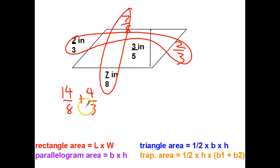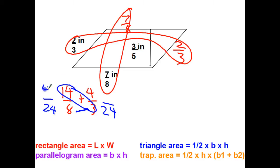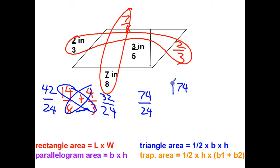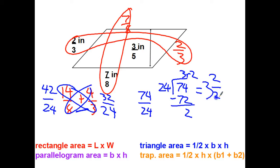The least common denominator is 24, which is the same thing I get when I cross multiply. So: 14 times 3 is 42, 4 times 8 is 32, and 42 plus 32 equals 74. That gives me 74 twenty-fourths. 24 goes into 74 three times — three times 24 is 72 — leaving a remainder of 2, so I get three and two twenty-fourths, which simplifies to three and one-twelfth inches.